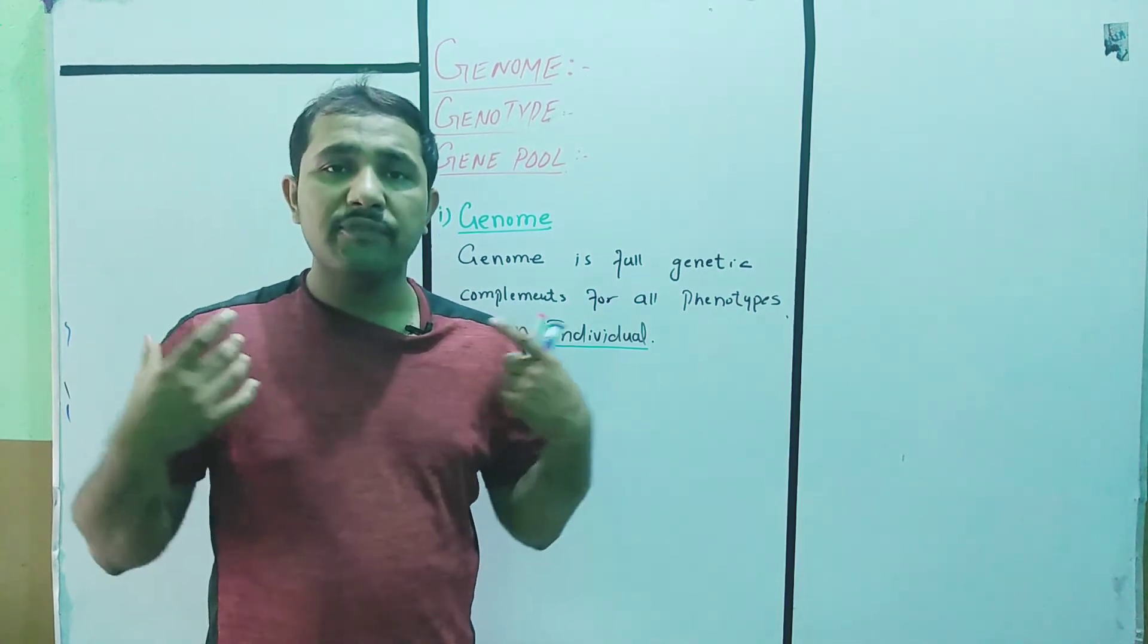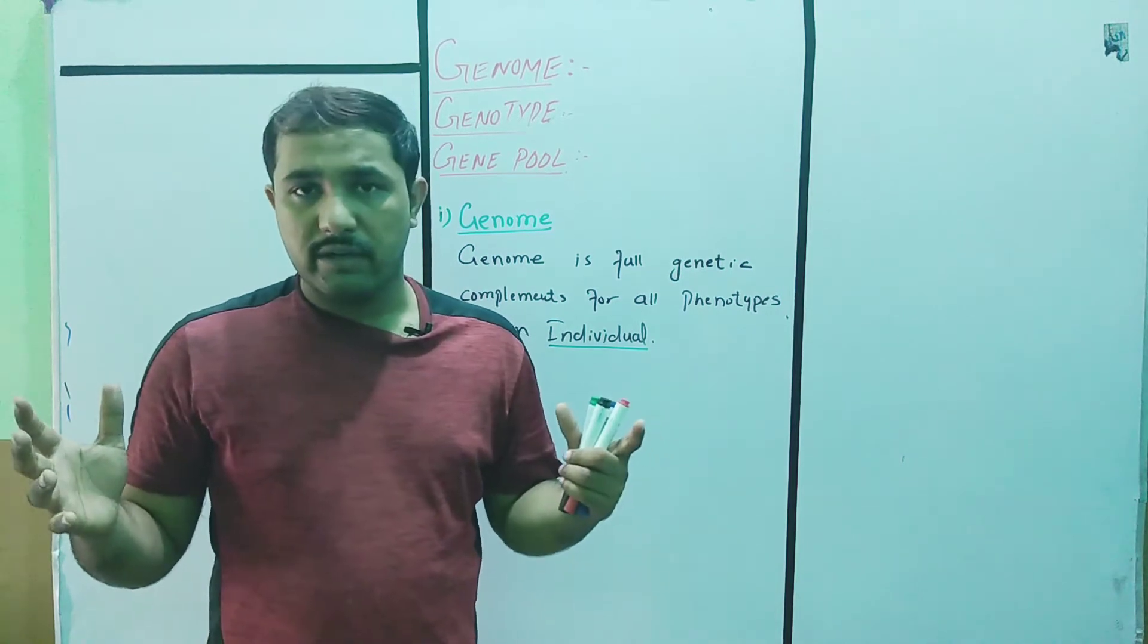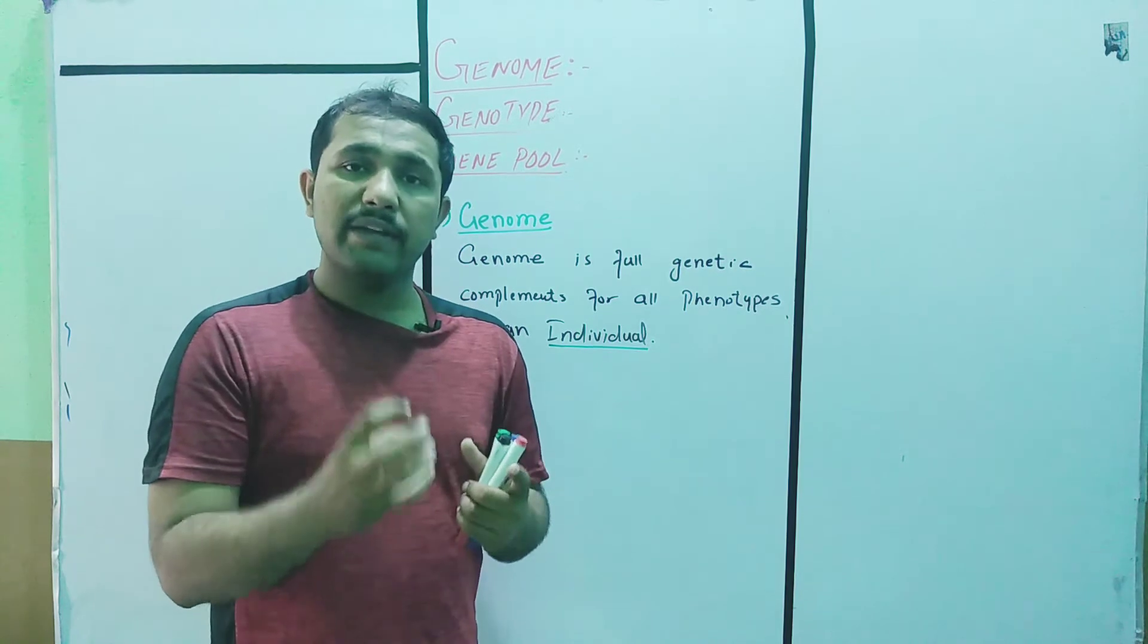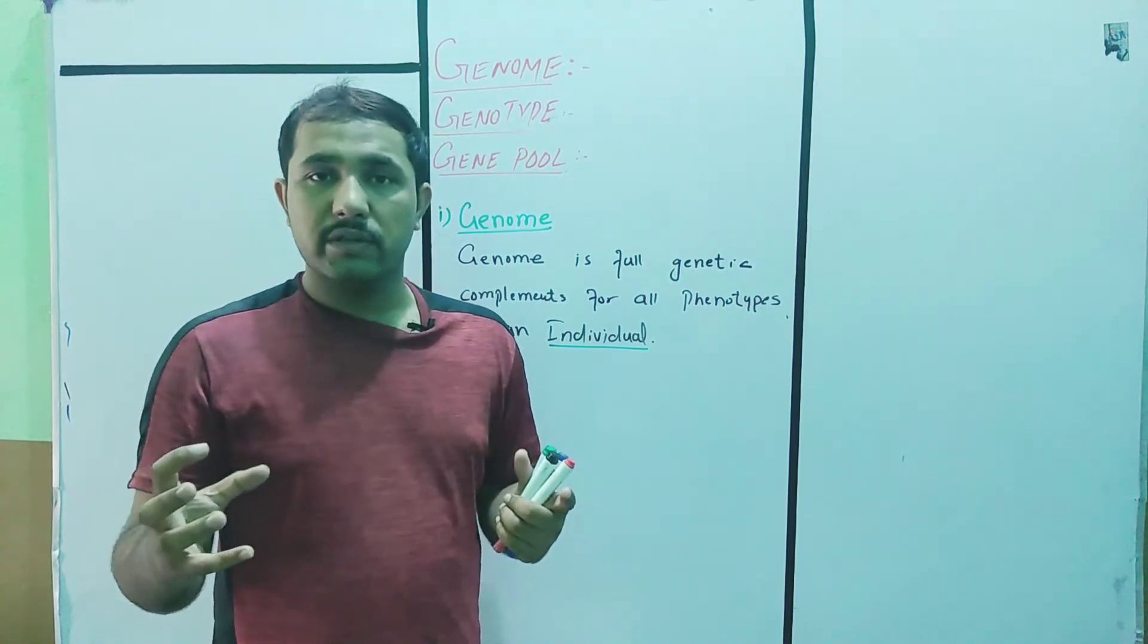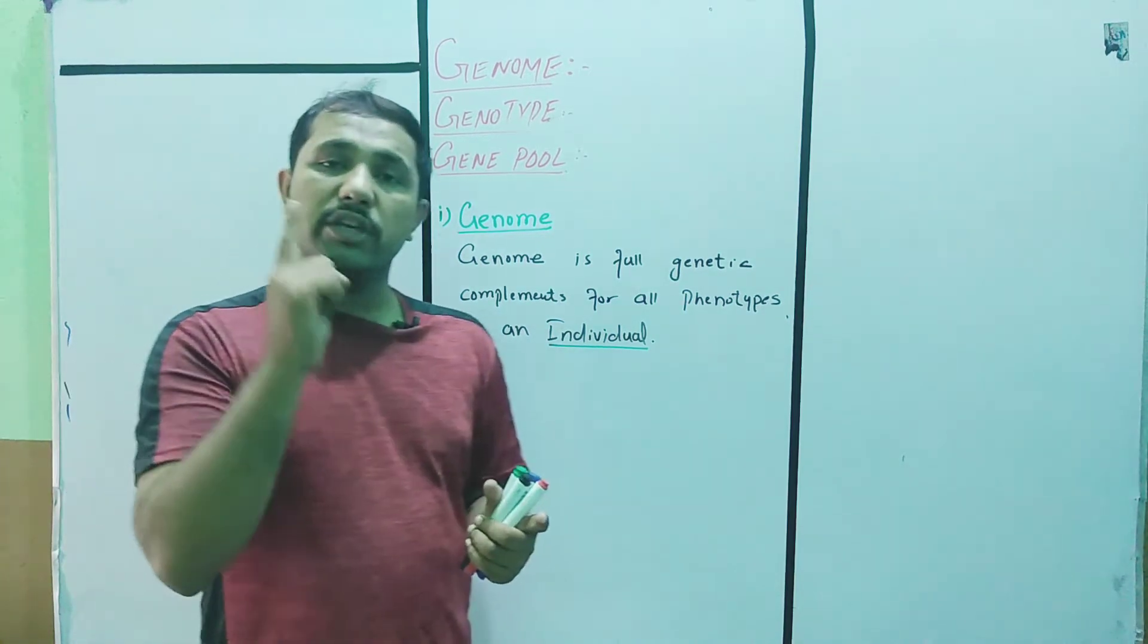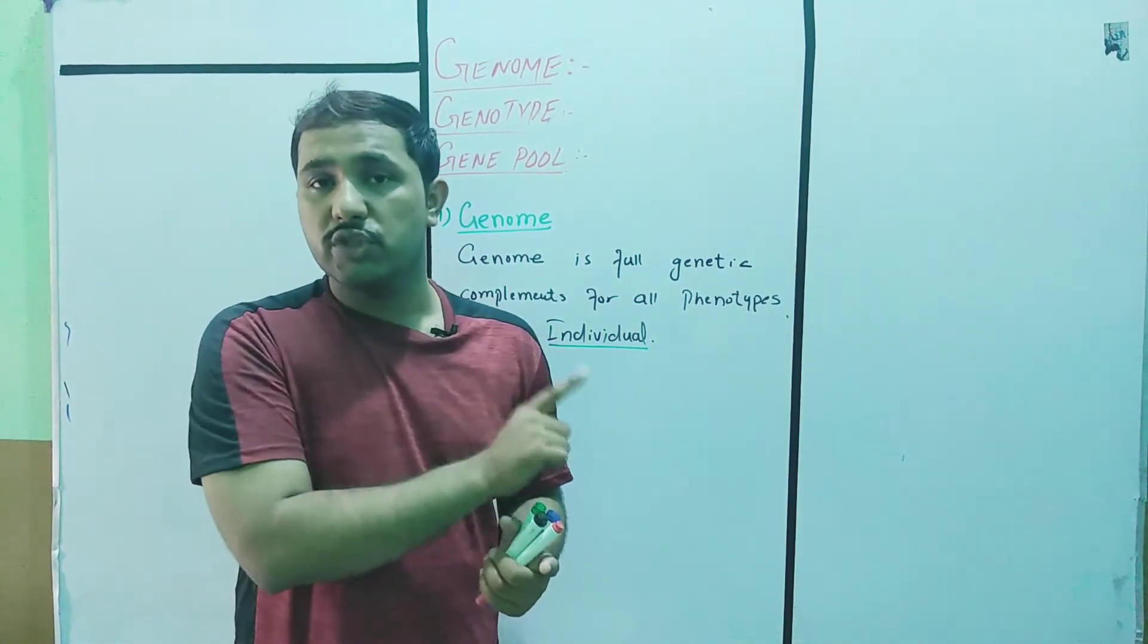Let's suppose we have thousands of characters. We all are different from one another, but if we take only a single individual and extract its genome and study their own characters, that makes its genome. A single individual's genetic complement is called its genome.